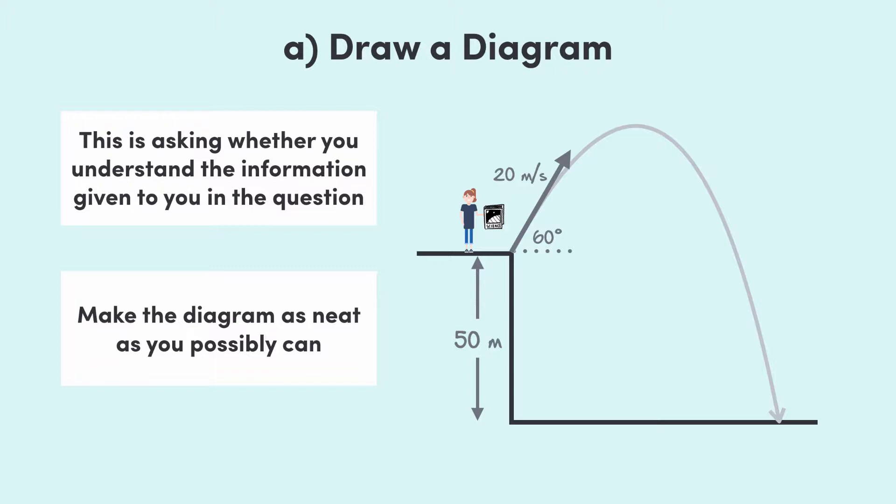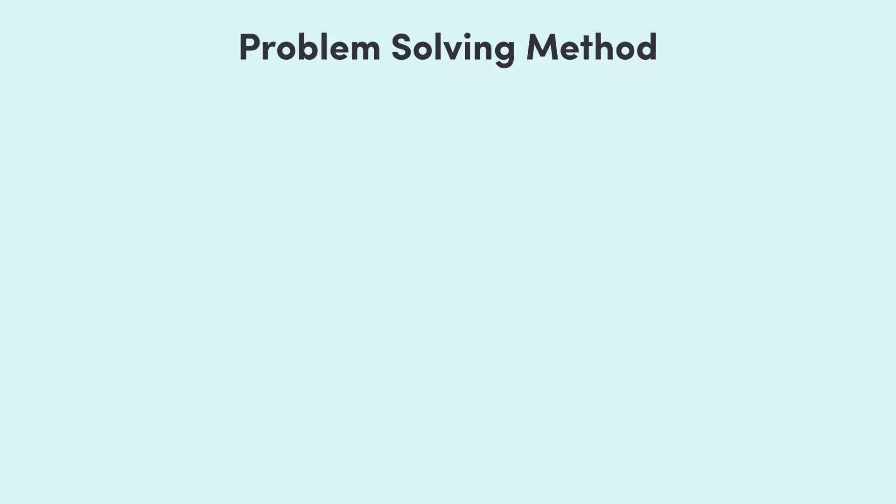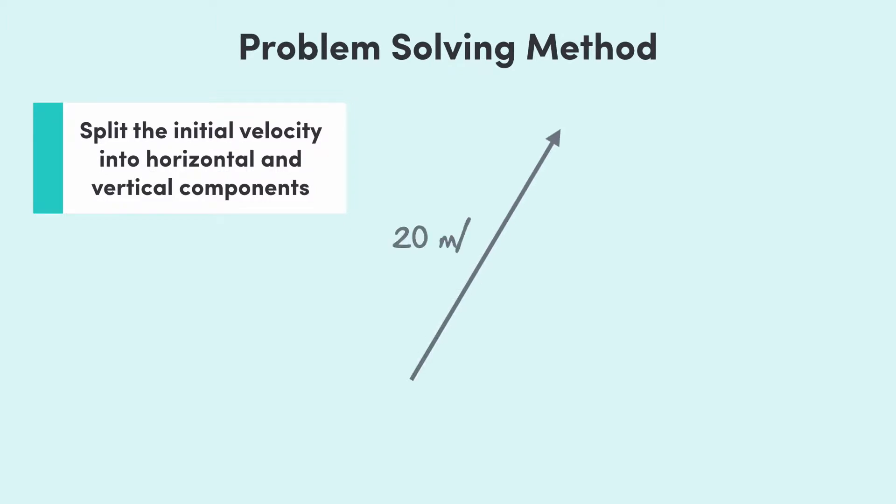Alright guys, before we can answer anything else, we have to start by splitting up the initial velocity into its horizontal and vertical components. And we do this by drawing in the velocity like this with the angle above the horizontal, here. Then, the horizontal component is this part and the vertical component is this part.